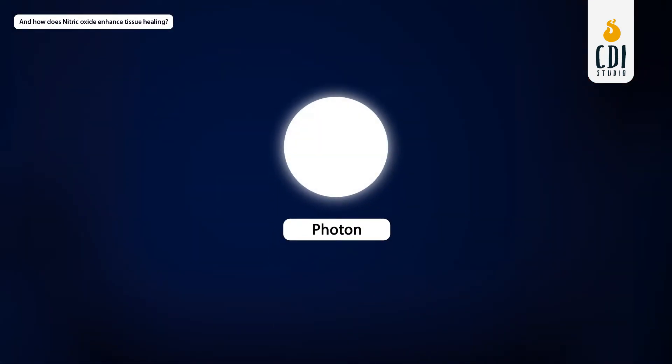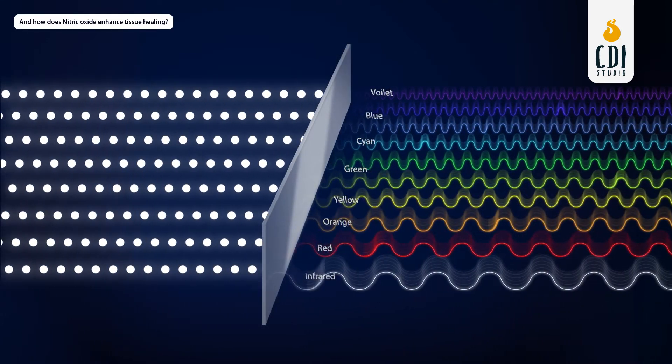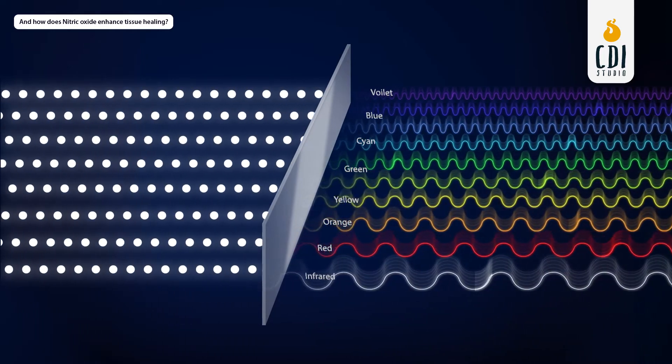Light is composed of photons. Photons are quantum units of energy. A photon emitted at a specific wavelength or color contains the same energy, irrespective of the source.